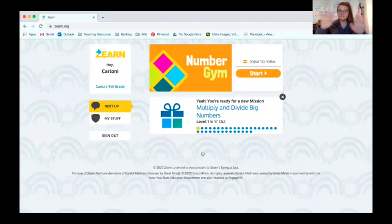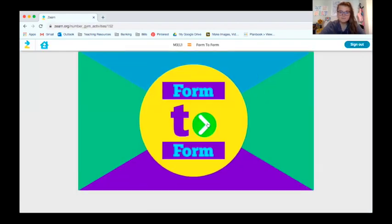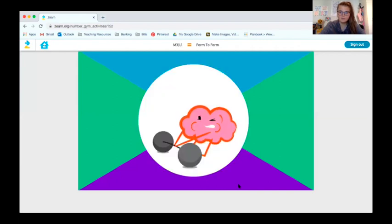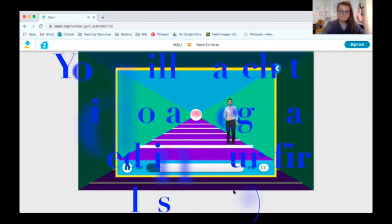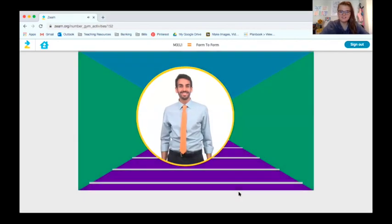Okay, so this is what you'll get for your first screen. We always are going to start with number gym. Everyone's starting out on mission three, level one, in and out. So this is just going to be where everyone's going to start. And number gym is fluency form to form. So we're going to start it. Okay, here we go.